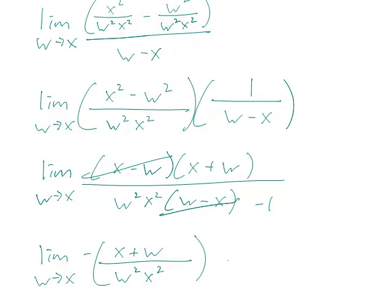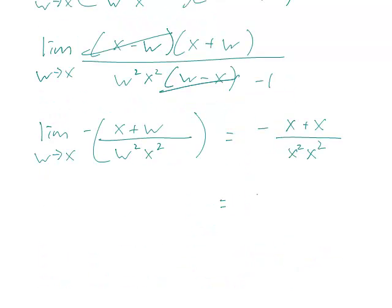And when w approaches x, we replace w with x. So this is going to be negative x plus x over x squared times x squared. And so that's going to be negative 2x over x to the fourth, or just negative 2 over x cubed.